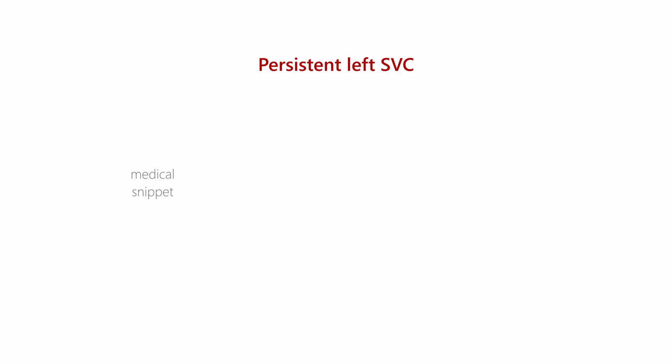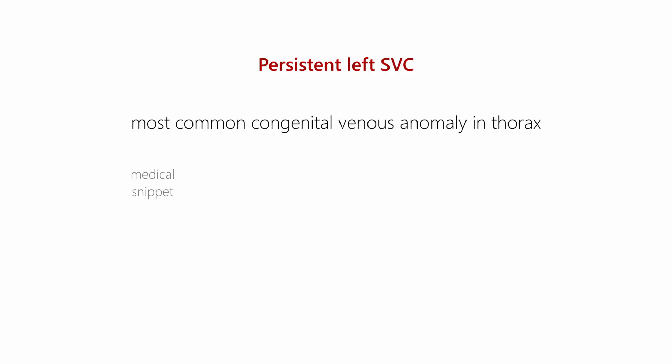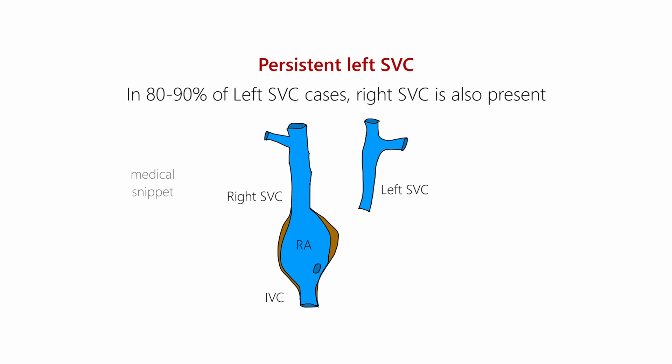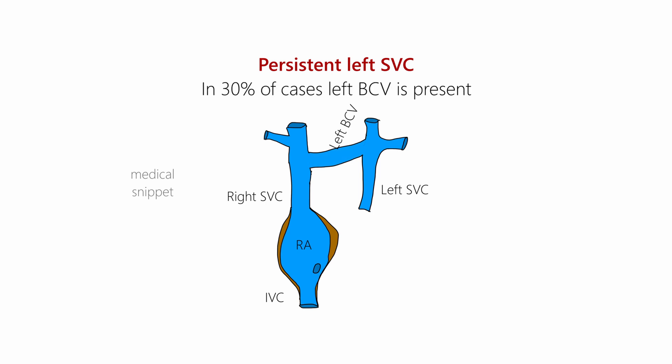It is the most common congenital venous anomaly in the thorax. It is present in 0.5% of the normal population and in 5% of patients with congenital heart disease. The right superior vena cava is also present along with the left superior vena cava in 80–90% of cases. The left brachiocephalic vein is present in only 30% of these cases.